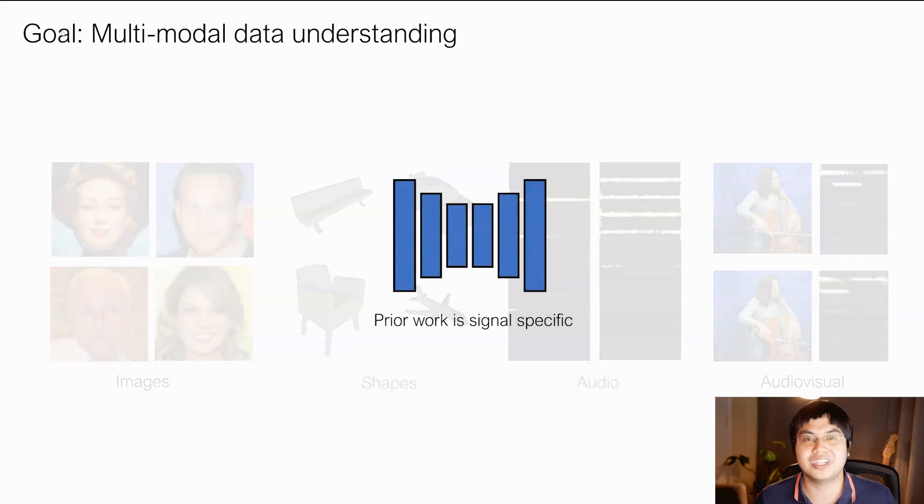An essential problem in machine learning is discovering the underlying structure in such data modalities. We refer to this problem as manifold learning. Existing approaches have explored this extensively for each particular domain. For example, for images, convolutional architectures provide a natural way to discover the structure. However, in this paper, we're interested in constructing a domain-agnostic model which can discover the underlying structure across each different signal modality.